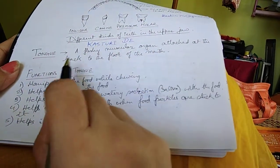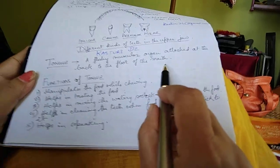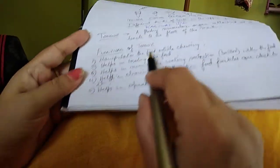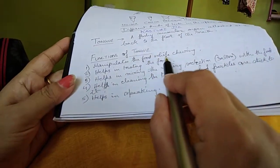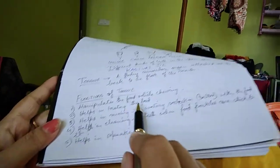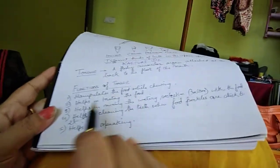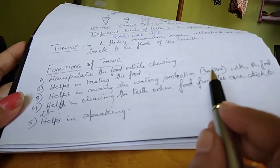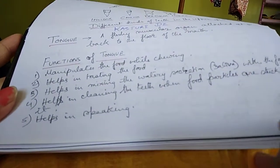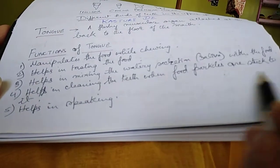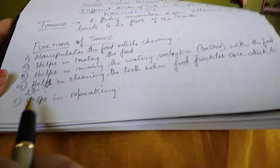The functions of the tongue are: it manipulates the food while chewing, it helps in tasting the food, it helps in mixing the watery secretion saliva with the food, it helps in cleaning the teeth when food particles are stuck to it, and it helps in speaking.